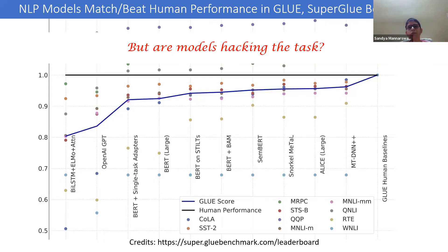By late 2018, BERT was beating human performance on GLUE, so the NLP community developed the SuperGLUE benchmark — a much harder benchmark. Again, a bunch of pre-trained models beat or matched human performance on SuperGLUE. Human performance on SuperGLUE is around 89%. The latest model, T5 from Google, has around 90%. In fact, Google Brain held the SuperGLUE leaderboard for much of 2020, except for a brief 12-hour period. So we know these models have tremendous capability across many tasks.